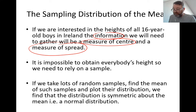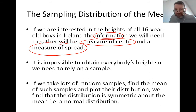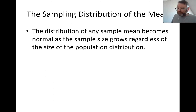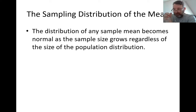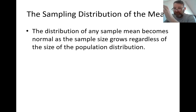If we take lots of random samples, find the mean of those samples, and plot their distribution, we discover the distribution is symmetric about the mean — in other words, a normal distribution. That is what we would expect for heights, since height is dictated by nature, and nature distributes data according to the normal curve. There is a cut-off of roughly 30 used as a reference sample size.